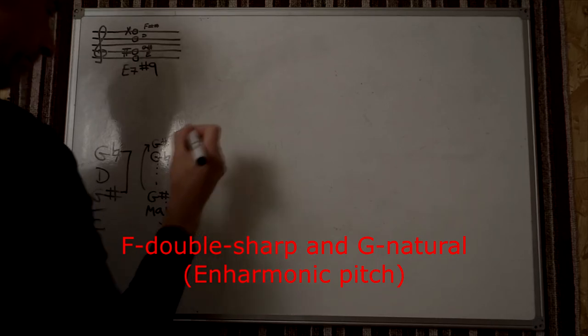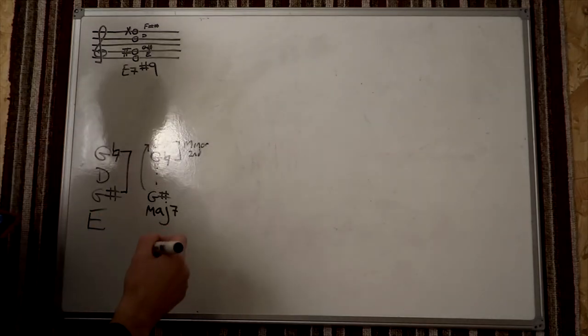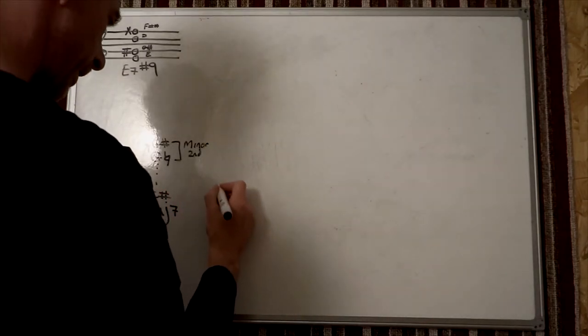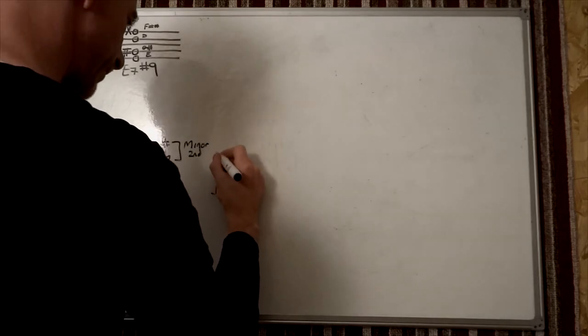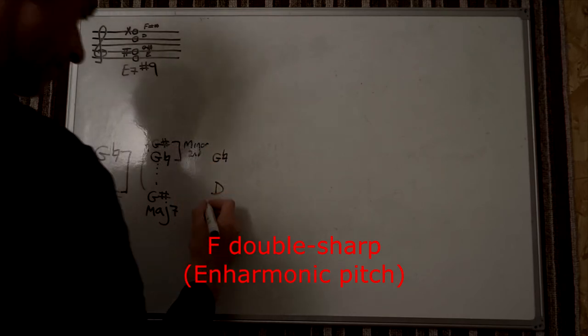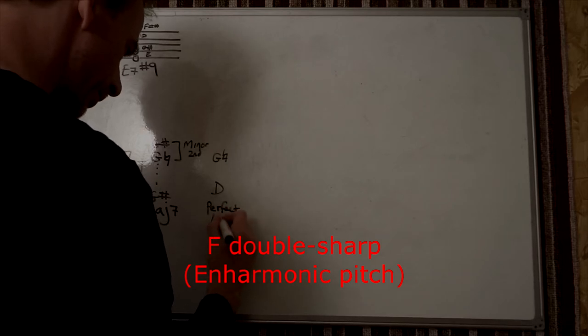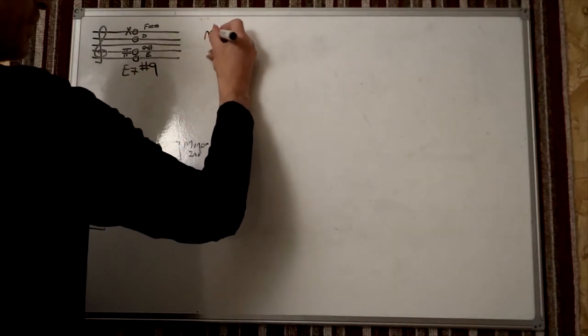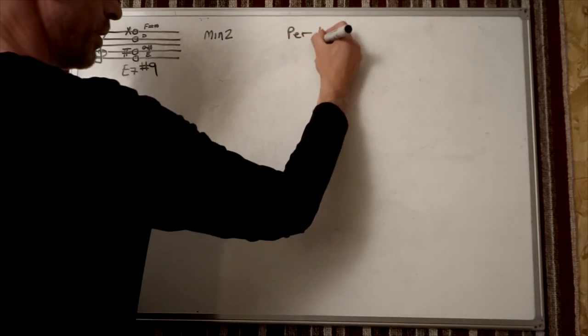Then we've got our D and our effective G-natural, and that is a perfect fourth. So far we've got a minor second and a perfect fourth.